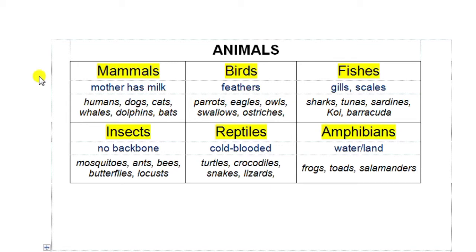Insects: we know something is an insect when it has six legs and no backbone. Reptiles are cold-blooded — in other words, their blood will have the same temperature as the outside environment. Things like turtles, crocodiles, snakes, and lizards. And then we have amphibians, which are animals that are able to live on land as well as in water. So these are six very large families that we need to pay more attention to.